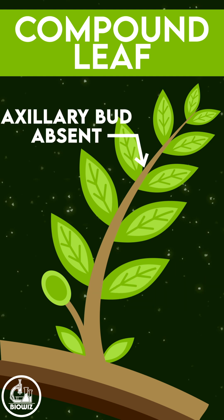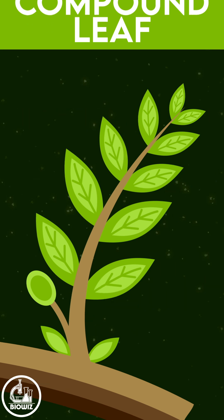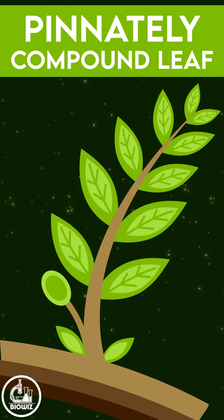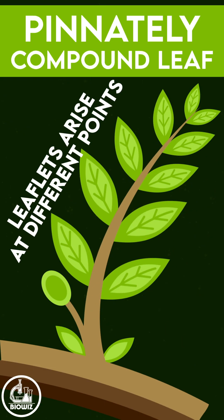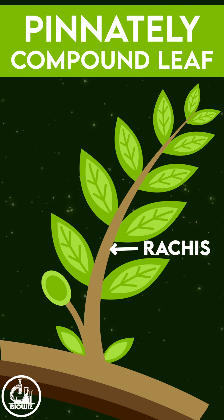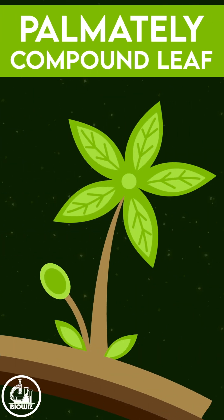Based on the arrangement of leaflets, compound leaves are divided into two types. In pinnately compound leaves, the leaflets arise at different points. The part of the mid-rib in pinnately compound leaves is called the rachis.